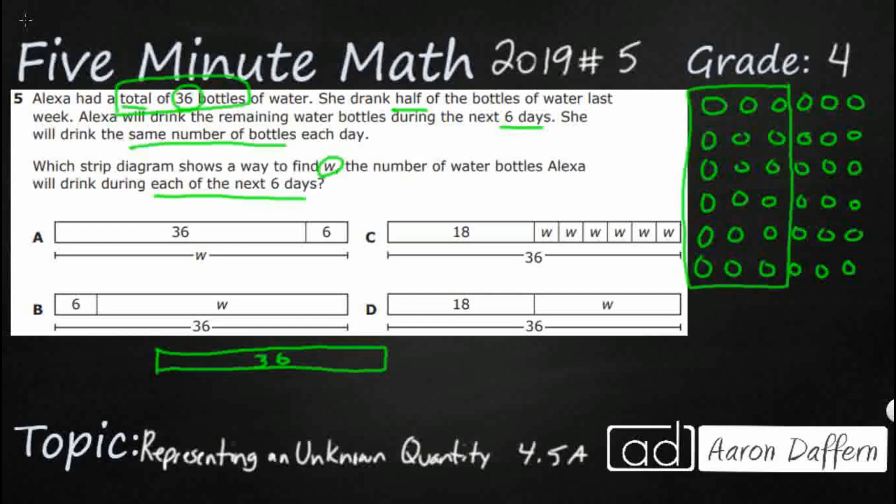So she drank half the water bottles last week. So I'm just going to take this right here and put a little line through there. They're still there, but we're already done with that. That's last week. And how much is that? We've got a 3 and we've got 6 rows of 3. So that's 18. So 36, if I wanted to cut that in half, that means divide by 2. That's 18.